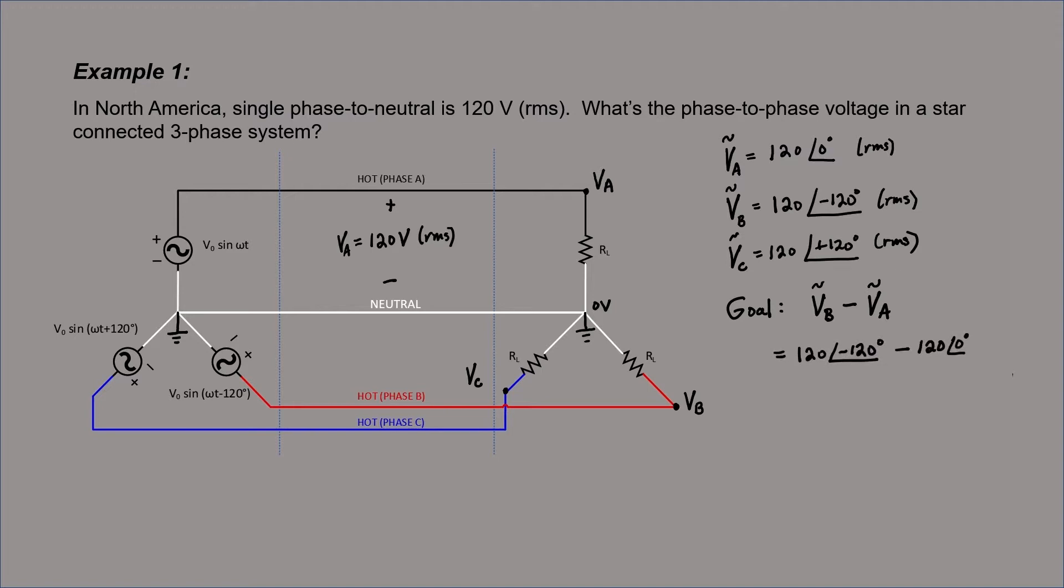First I convert polar to rectangular. Now we can add up the real parts and imaginary parts in order to get a single complex number. If we convert this back into polar form, we find that the magnitude is approximately 208 volts. It means that if I use a voltmeter, set it to the AC mode, put one side on phase A and the other side on phase B, I'll measure 208 volts RMS on the voltmeter.